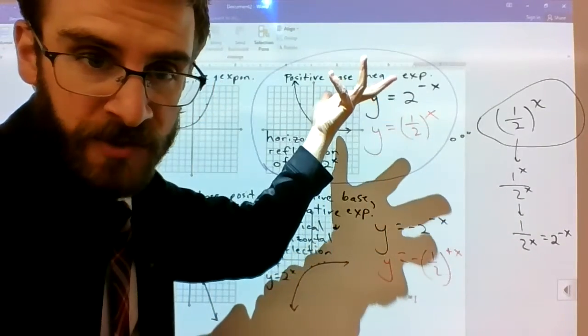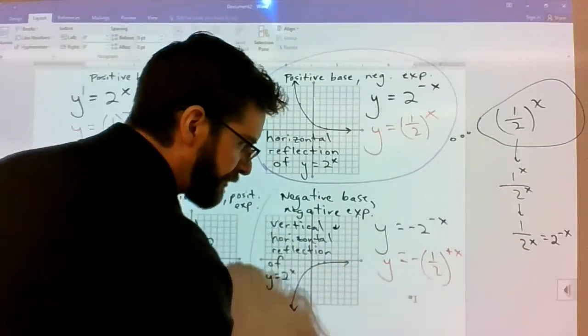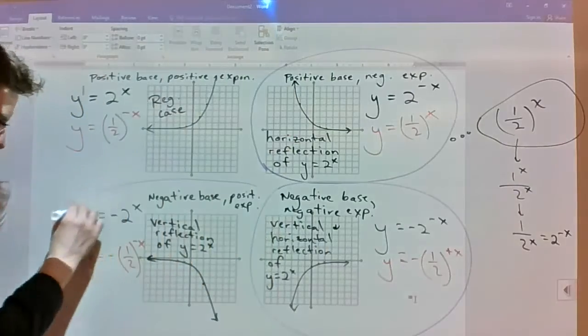So if you saw y equals five to the negative x minus 12, you should be seeing this curve pattern because it's got a positive base to a negative x and it's just got an asymptote somewhere other than zero. This information all matches together, this information all matches together, and this information all matches together.